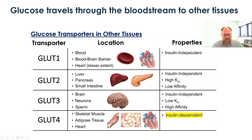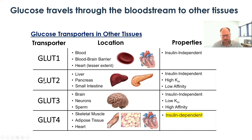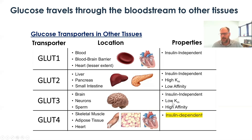An important property of GLUT1 is that it functions independently of insulin — and that's not true of all glucose transporters, as some actually require insulin to function. GLUT2 is found in the liver, pancreas, and small intestine; it is also insulin-independent and has very low affinity but high KM for glucose. GLUT3, found in neurons and sperm, is also insulin-independent but is a high-affinity, low-KM transporter. This arrangement allows the brain to get priority for picking up glucose.